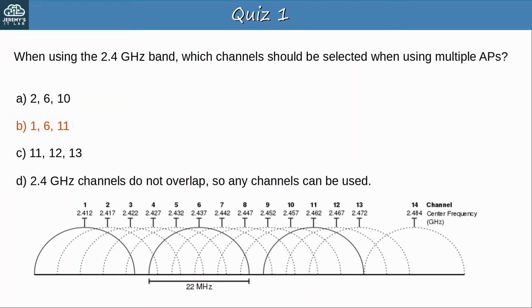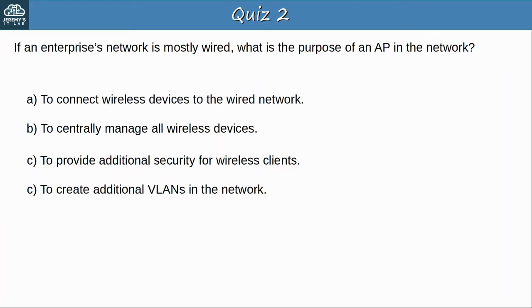Question 2: If an enterprise's network is mostly wired, what is the purpose of an AP in the network? The answer is: to connect wireless devices to the wired network. In 802.11, the wired network is called the DS, distribution system, and the AP's main role is to connect wireless devices to the wired network.